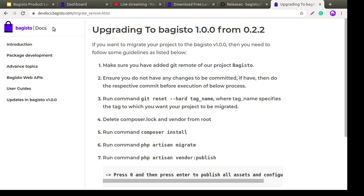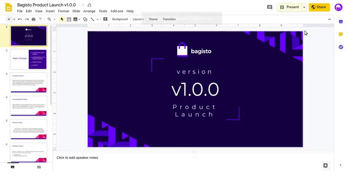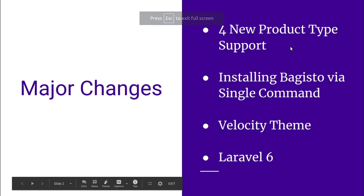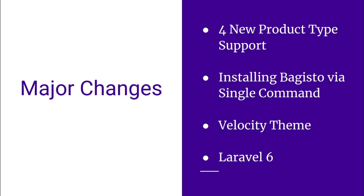Now let's move on to our presentation. These are the four major changes: four new product types added in our major release; installing Bagisto via a single command — you can easily install Bagisto in your localhost or on a live server with just one command; the Velocity theme; and adoption of Laravel 6.